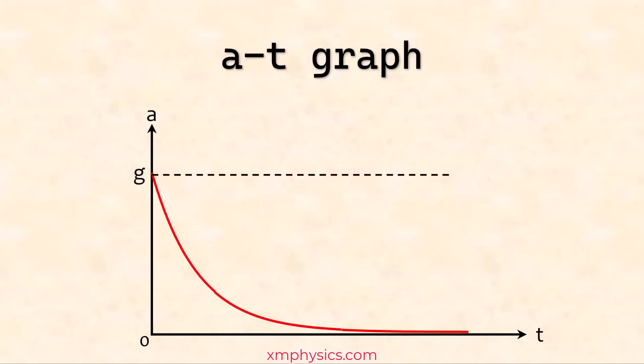The a-t graph is very easy. It starts off being 9.81 meter per second square and then it approaches zero, right? As simple as that.